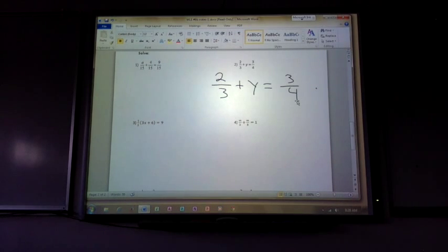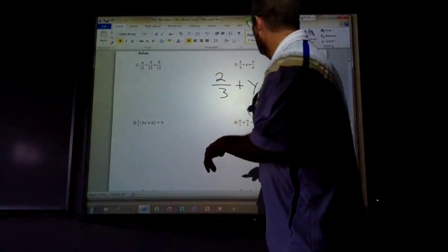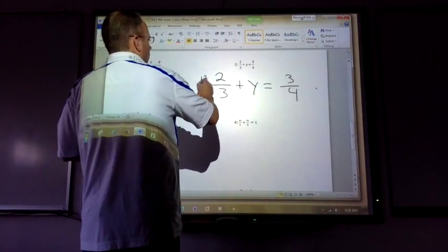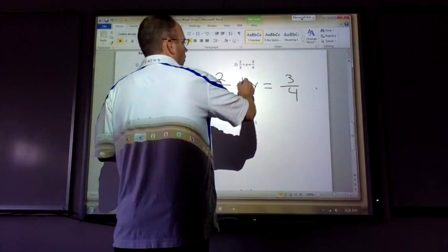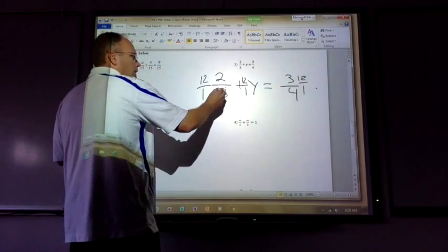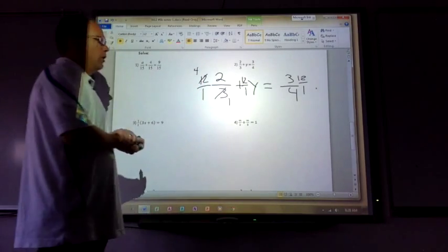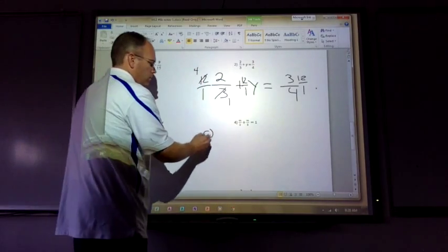So if I were to multiply everything by 12 over 1, multiply this by 12 over 1, this by 12 over 1, and this by 12 over 1, this reduces. Remember, we reduce the fraction. What does this become on that first term? Eight. Eight equals.